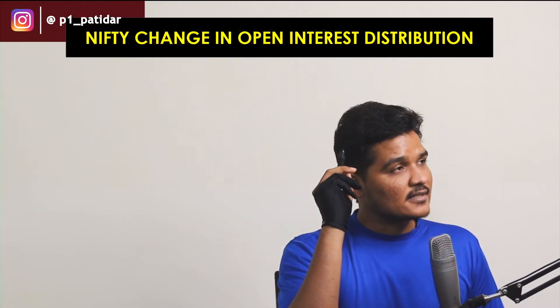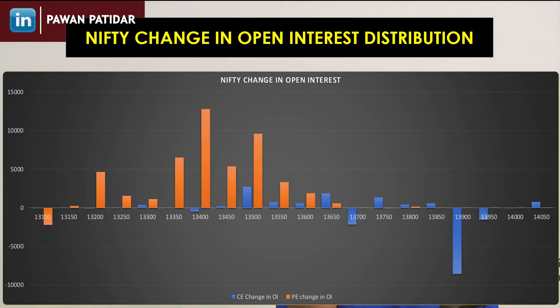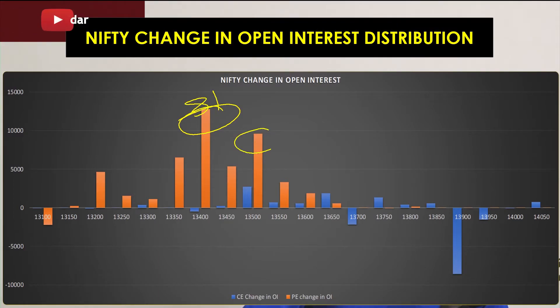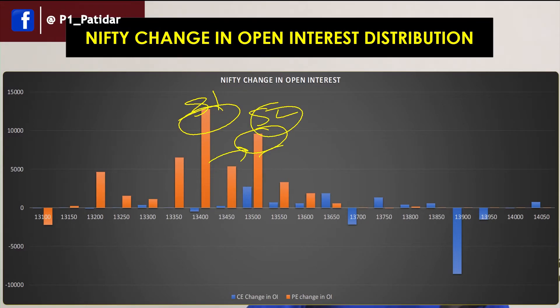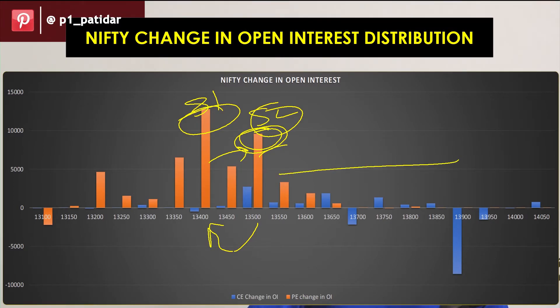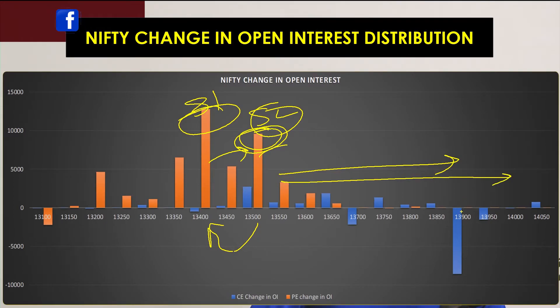Now let's see the change in open interest of Nifty. In the change in open interest distribution, support is at 13,400 — that is support one. Support two appears at 13,500 but that's not valid since support two cannot be above support one. What's actually happening is people are squaring off positions at 13,500 and making new positions at 13,400. On the resistance side, there is no clear resistance visible today, meaning people expect Nifty might go way beyond 14,000 — that's why they are not making positions on the call side. Today's picture indicates Nifty might move up, and tomorrow traders are also thinking Nifty will go up.